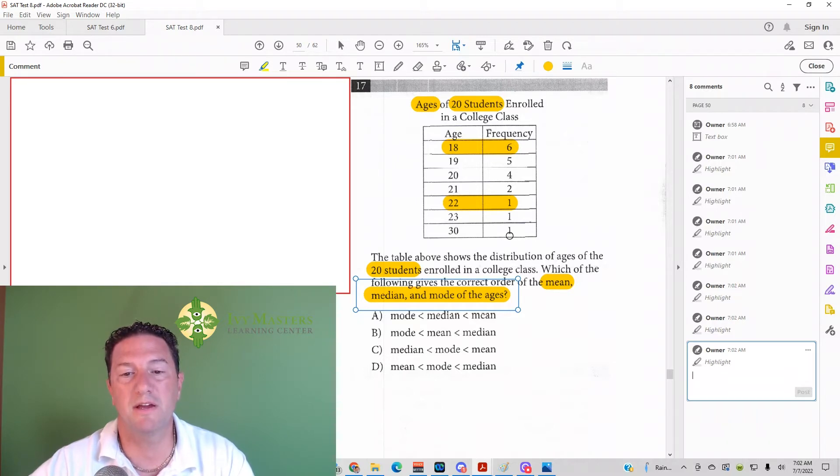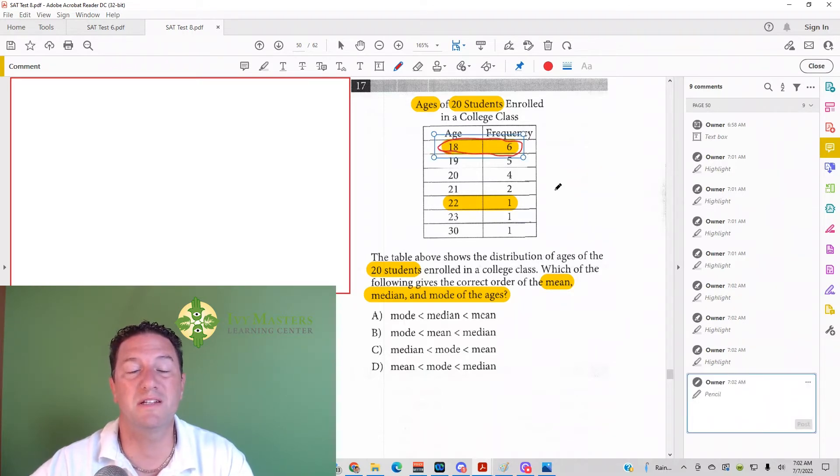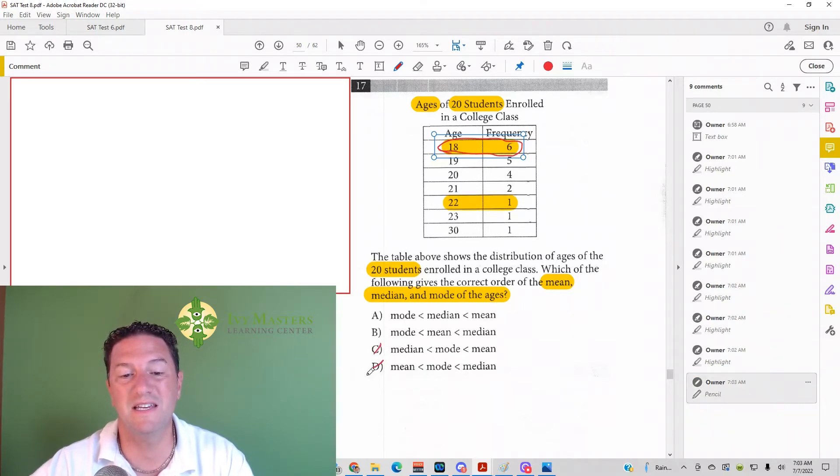The mode is the most common number. Now sometimes students will be like, oh, the mode is 6. The mode is not 6. It's not measuring the frequency, it's measuring the ages of people, and the frequency is how many people are those ages. So the mode is actually 18. Because when it says frequency 6, literally it's telling you that there are 618s. 6 students are 18 years old. And that's the youngest you could get in this chart. So the mode must be the smallest. So I could eliminate C and D.